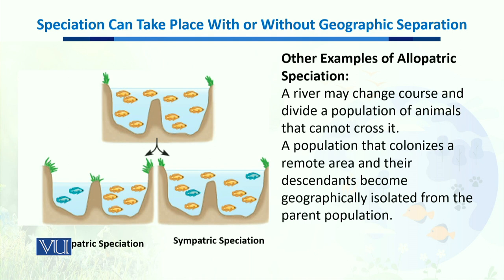As you can see here, suppose this was a lake before, and one species was living there. The water level went down, and as a result we got two different lakes. When they became geographically isolated, gene flow stopped and a new species arose from the existing species. This is the allopatric speciation process.